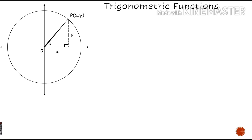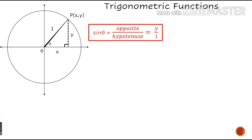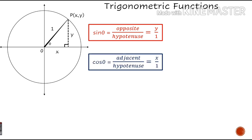Now let's define trigonometric ratios. Sine theta, as you know, is opposite upon hypotenuse, so we get y upon 1. Cos theta is adjacent upon hypotenuse, so we get x upon 1. Therefore we can say that P(x, y) is the same as P(cos theta, sin theta).